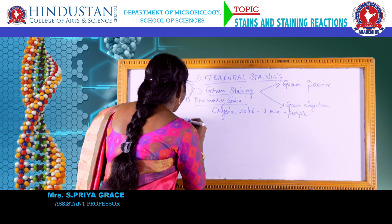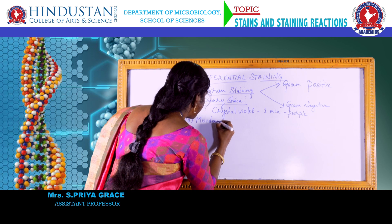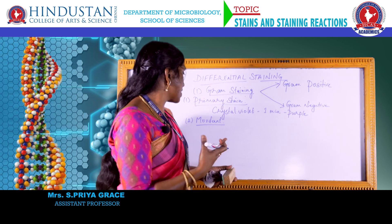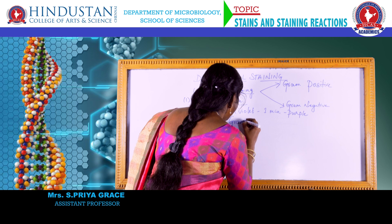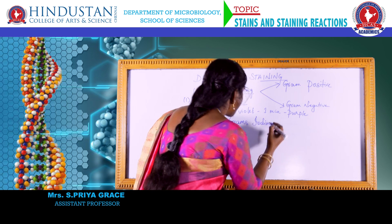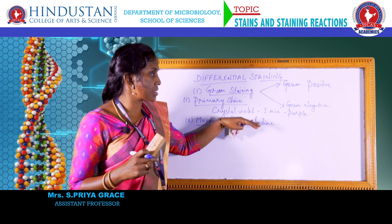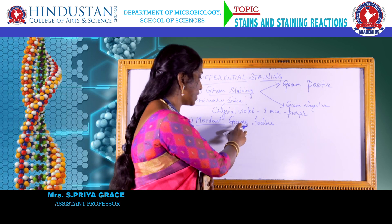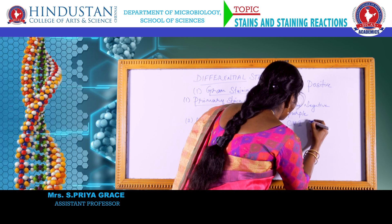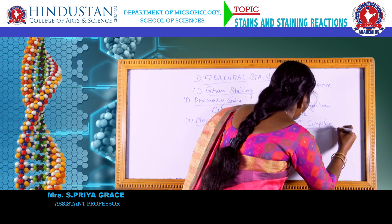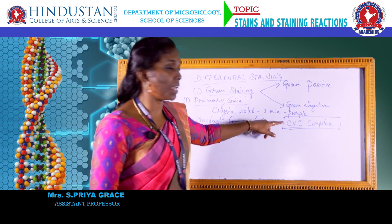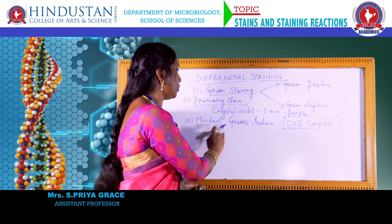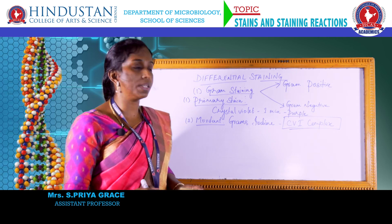The second reagent added is the mordant, which is Gram's iodine. The mordant enhances color fixation. After adding Gram's iodine for one minute, the crystal violet reacts with it to form the crystal violet-iodine (CVI) complex, which is one of the important steps in the gram staining process. At this stage, all gram positive and gram negative cells have formed the CVI complex.